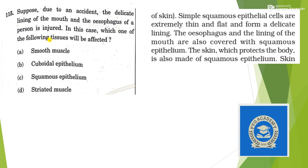Next: suppose due to an accident, the delicate lining of the mouth and oesophagus of a person is injured. Which tissue will be affected? Simple squamous epithelium cells are extremely thin and flat and form a delicate lining. The oesophagus and the lining of the mouth are also covered by squamous epithelium. So our answer should be option C — squamous epithelium.